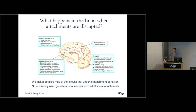Where are the specific neuronal populations within these areas of cortex? Where do they project to in the brain? And what specific aspects of behavior are they mediating — particularly, which parts are mediating attachment behavior? Part of the reason we don't understand this well is that none of the commonly used genetic animal models display adult social attachments.